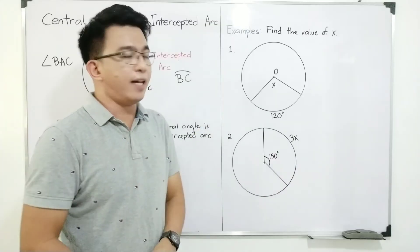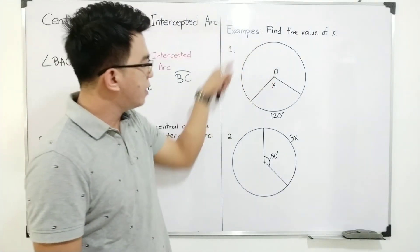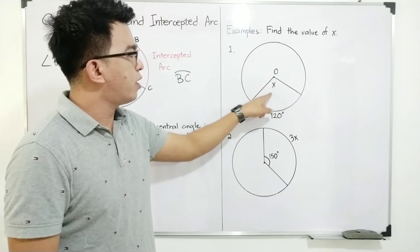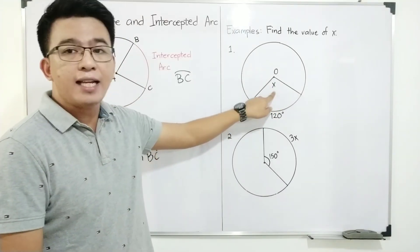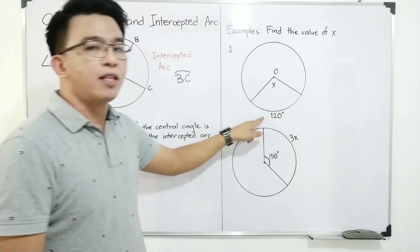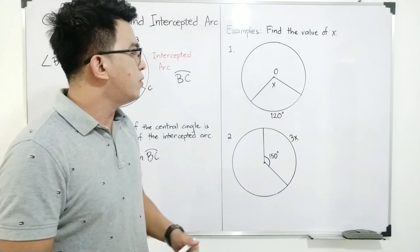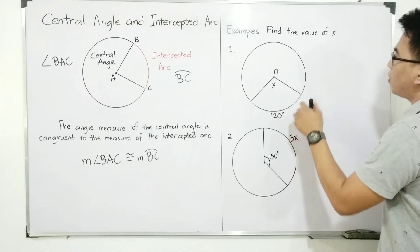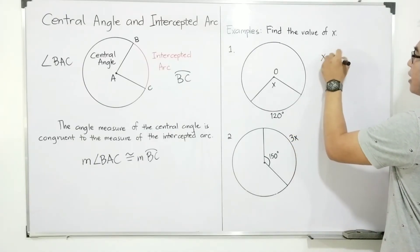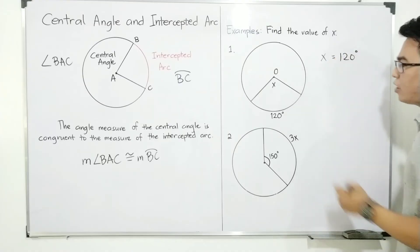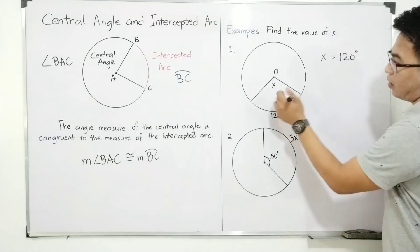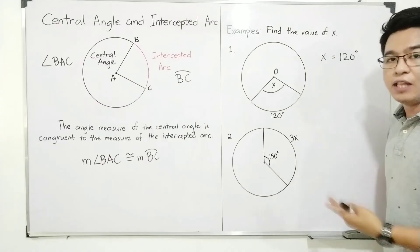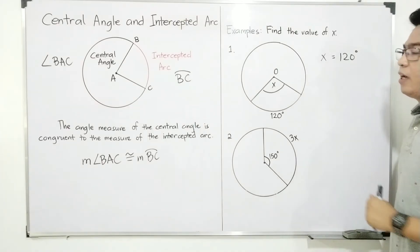To better understand the relationship between the central angle and the intercepted arc, here are some examples. Find the value of X. As you can see, we have circle O, wherein the measurement of the central angle is represented by X, while the measurement of the intercepted arc is 120°. Since they are congruent, we can say that X is equal to 120 degrees. That's how easy it is — because the measurement of the central angle is equal to the intercepted arc. So the answer is X = 120.